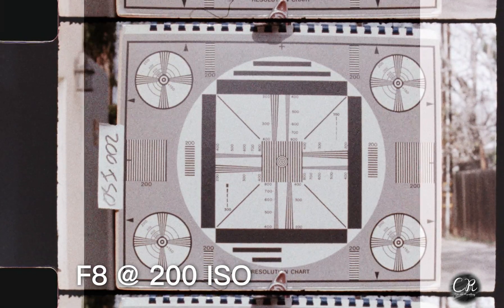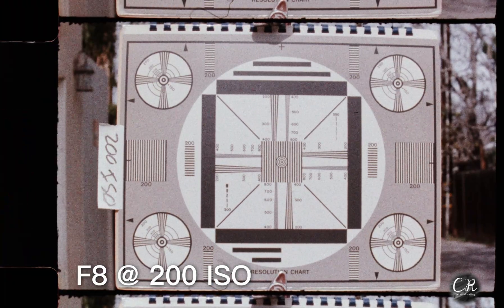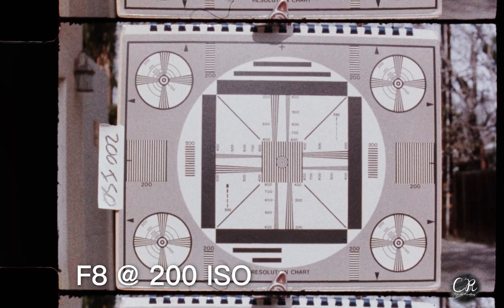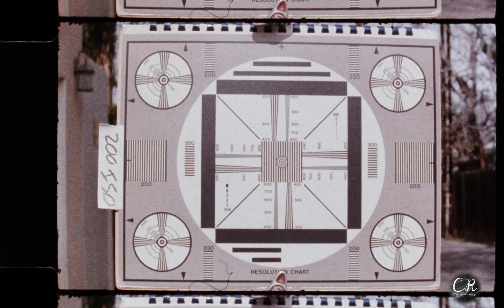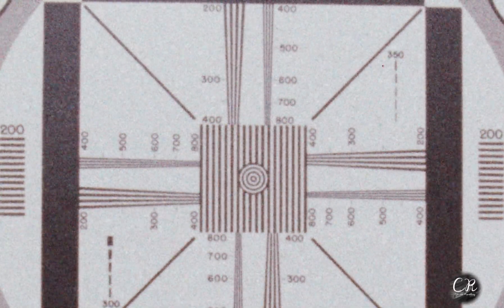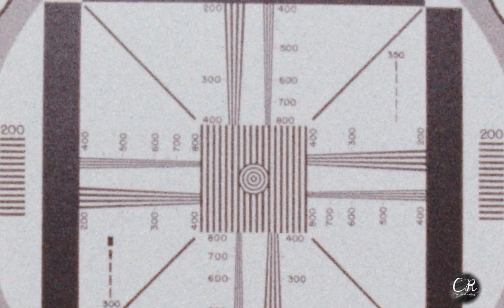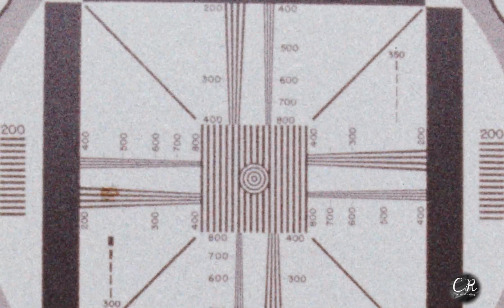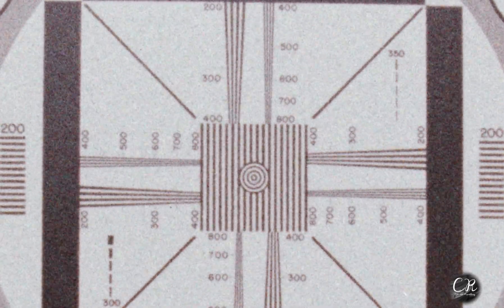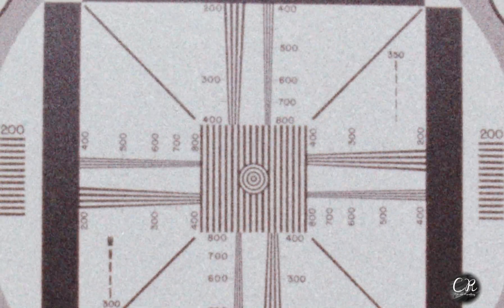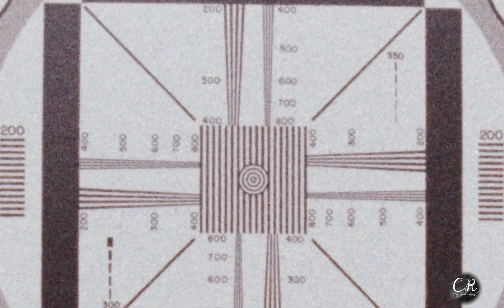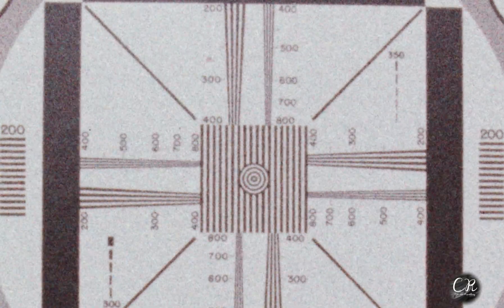Next, we're going to look at resolution, shooting this at 200 ISO. We're going to punch in and show you that you can clearly see 800 lines of resolution, which is pretty good. This is kind of where Kodak 500T sits. The 500T is a little bit crisper, but not a heck of a lot. The grain here is a problem, but it's not making the film have less resolution.